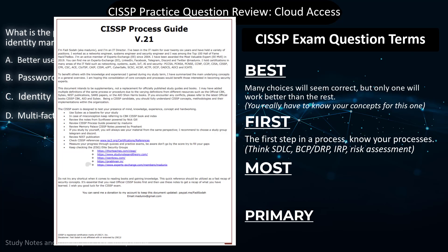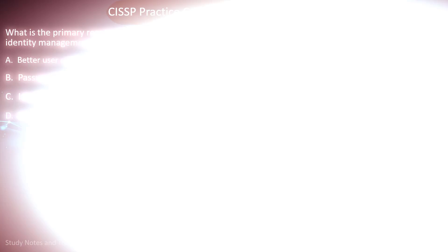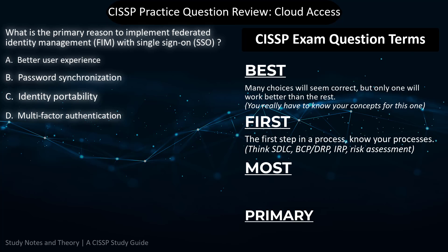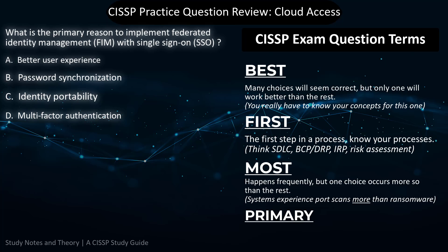Make sure to download for free the CISSP Process Guide by Fadi Soda, aka Mad Unix. The word 'most' is a tricky one — it means something happens frequently, either in quantity or to the greatest extent. It doesn't happen all the time, but when it does, it happens more so than the other choices.